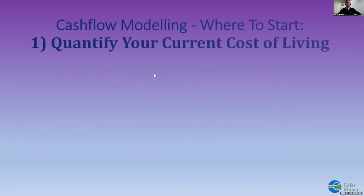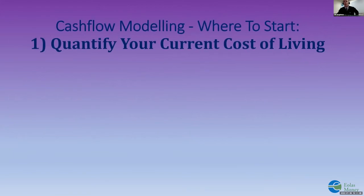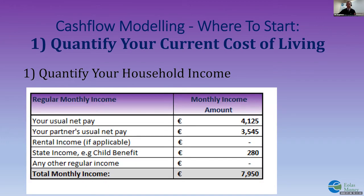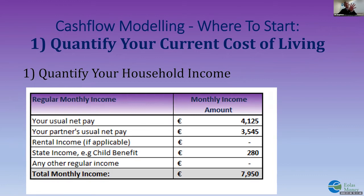The first thing I asked Lorcan and Niamh to do was tell me about their incomes and quantify their cost of living. First, break down how much money comes into their household every month. Niamh is paid fortnightly, so we multiply her fortnightly income by 26.09 divided by 12, giving us €3,545 for her. When we look at all the income for the household per month, they have a regular monthly income of €7,950.